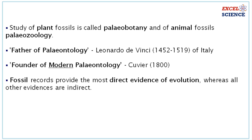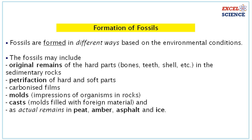Fossil records provide the most direct evidence of evolution, whereas all other evidences are indirect. Fossils are formed in different ways based on environmental conditions. They may include original remains of hard parts like bones, teeth, and shell preserved in sedimentary rocks.